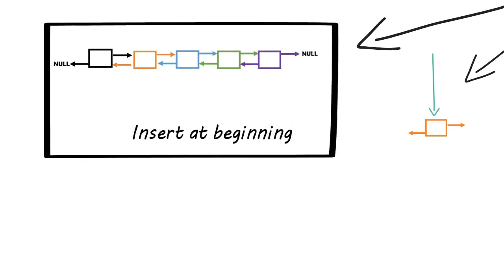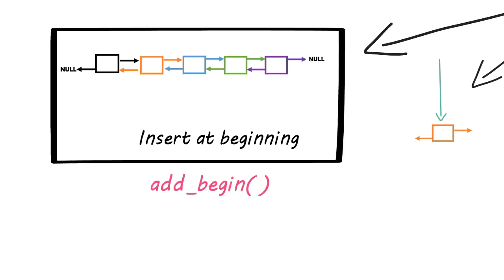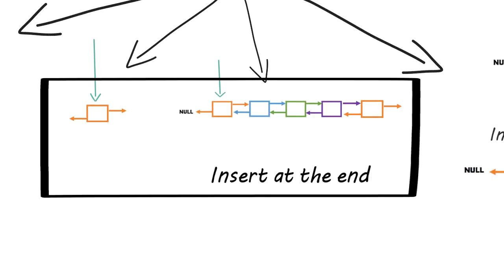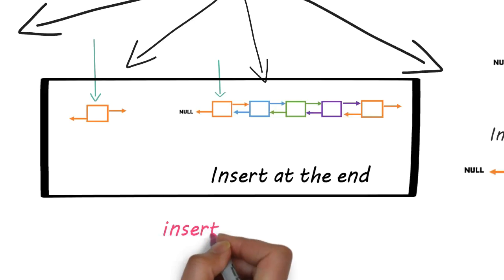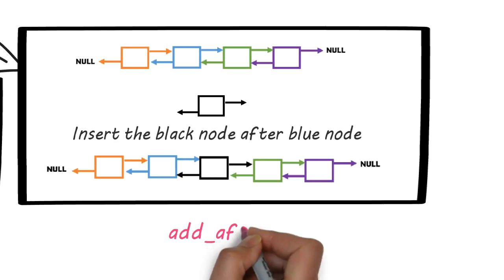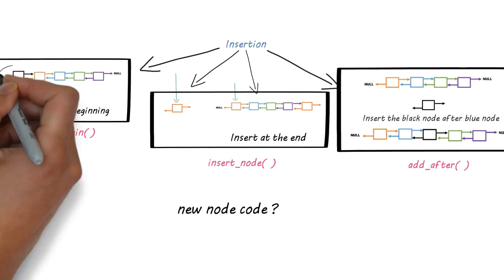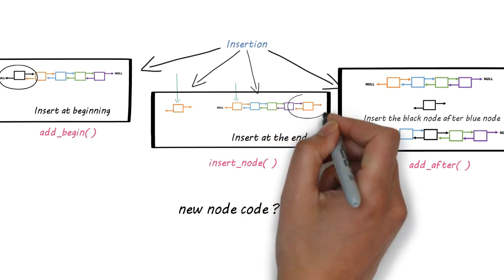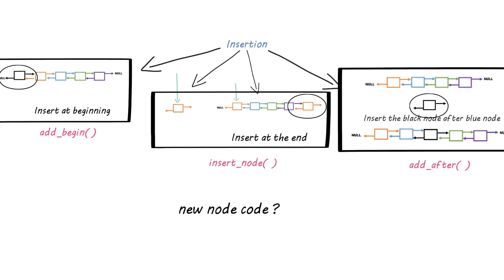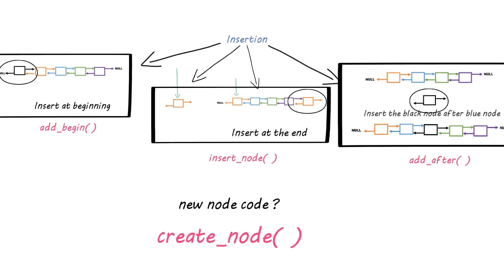We will name each function according to its functionality. First, we will create a function called 'addBegin' to add a node at the beginning of the doubly linked list. Since we will face the first-node condition only once, we will name that function 'insertNode'. The last case we will name 'addAfter'. There is one last thing common in all these functions — we are inserting a new node, so we need code for that new node and we need to take input from the user. Rather than writing that code three times, we will write it in a function called 'createNode'.